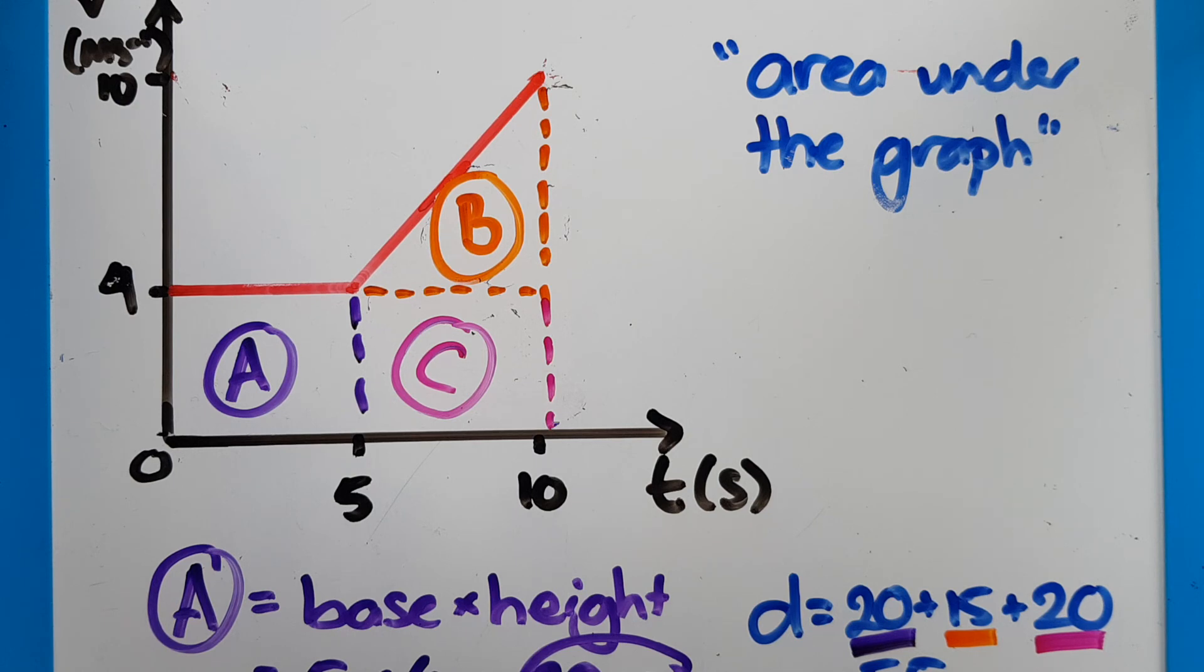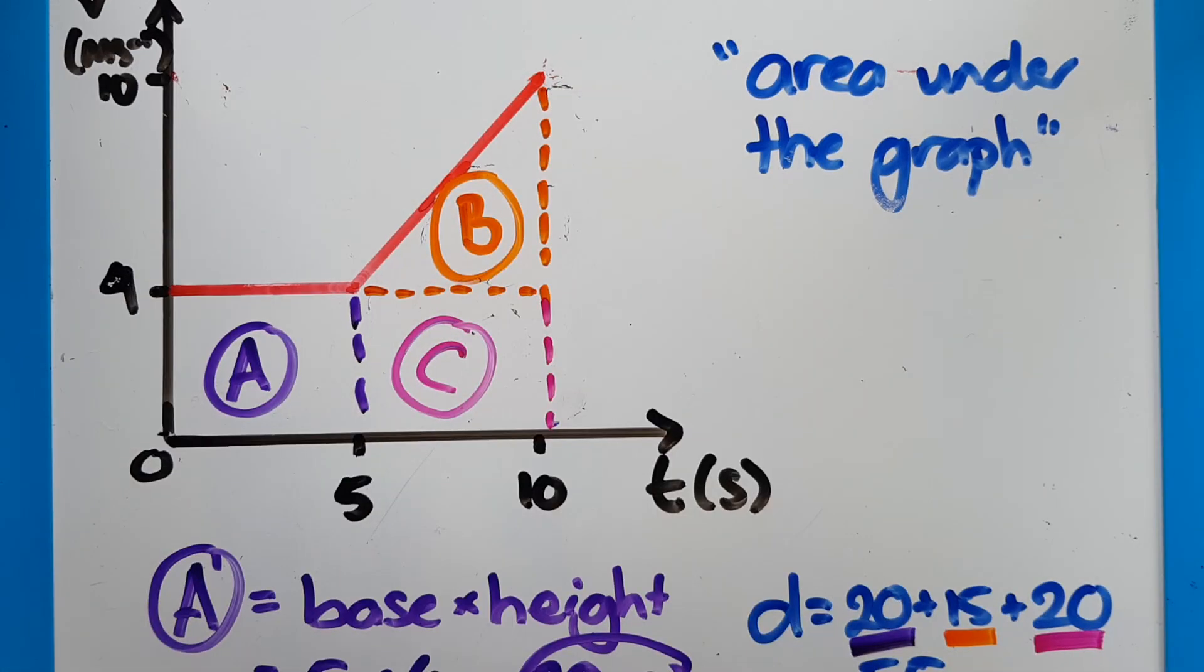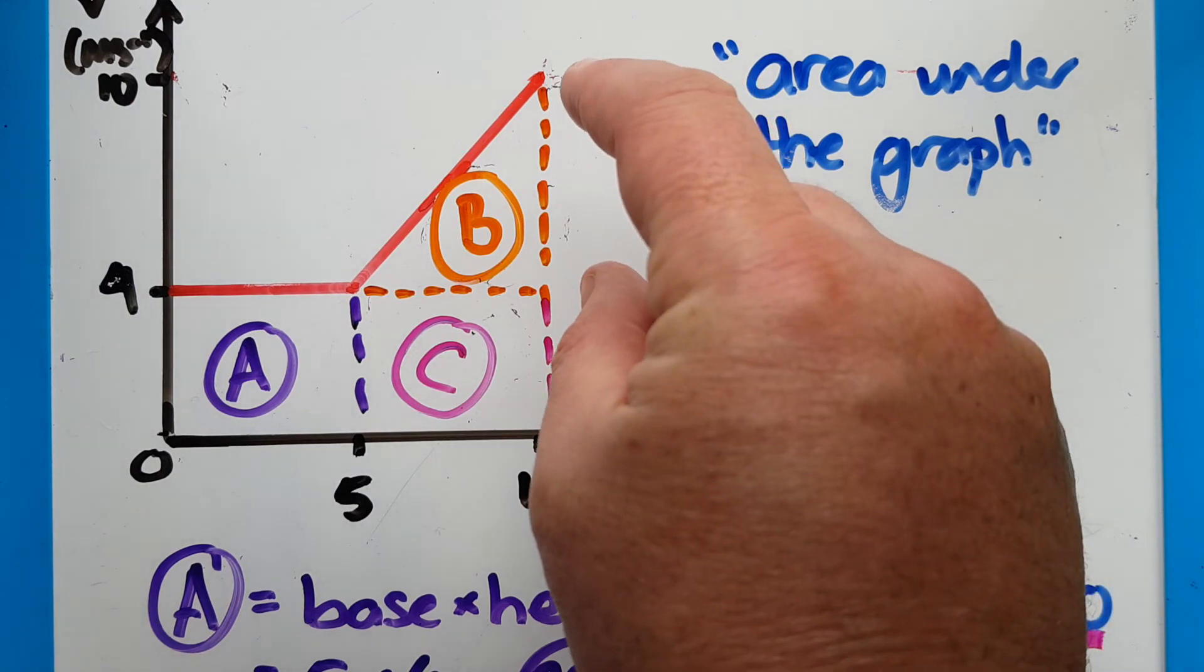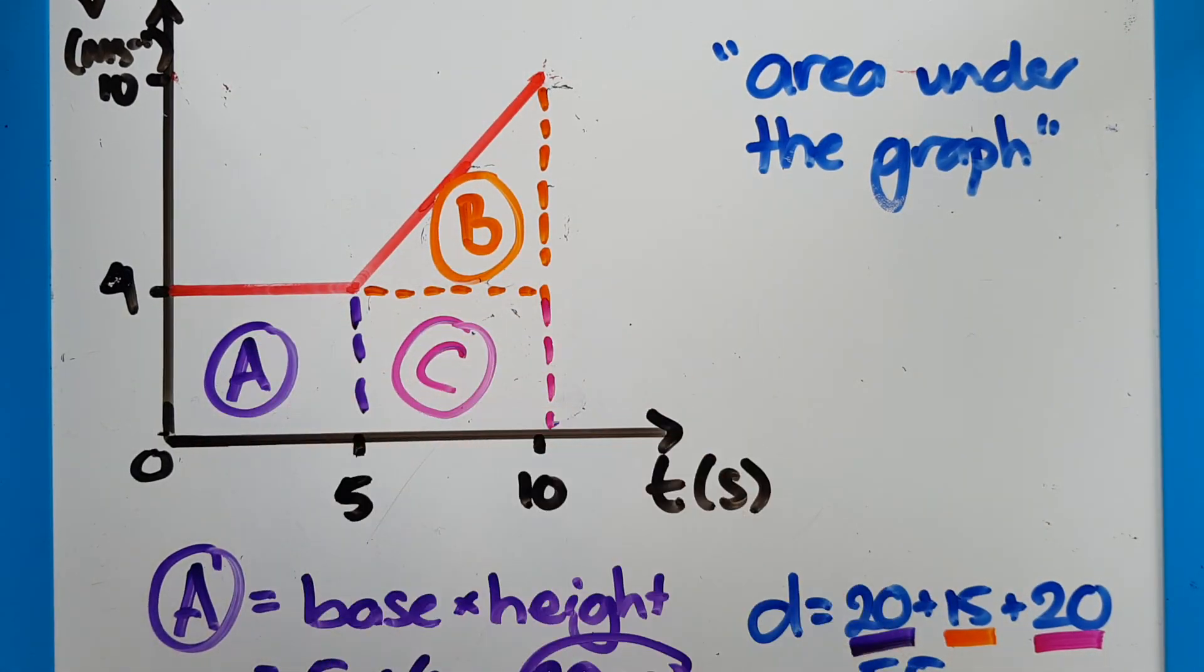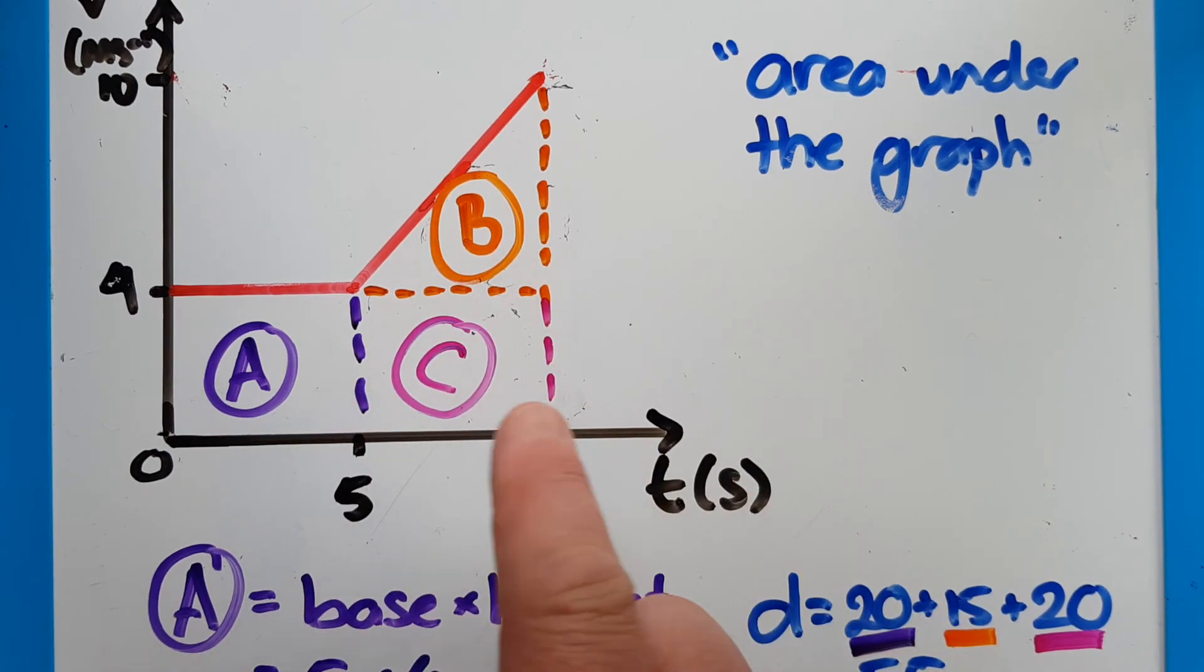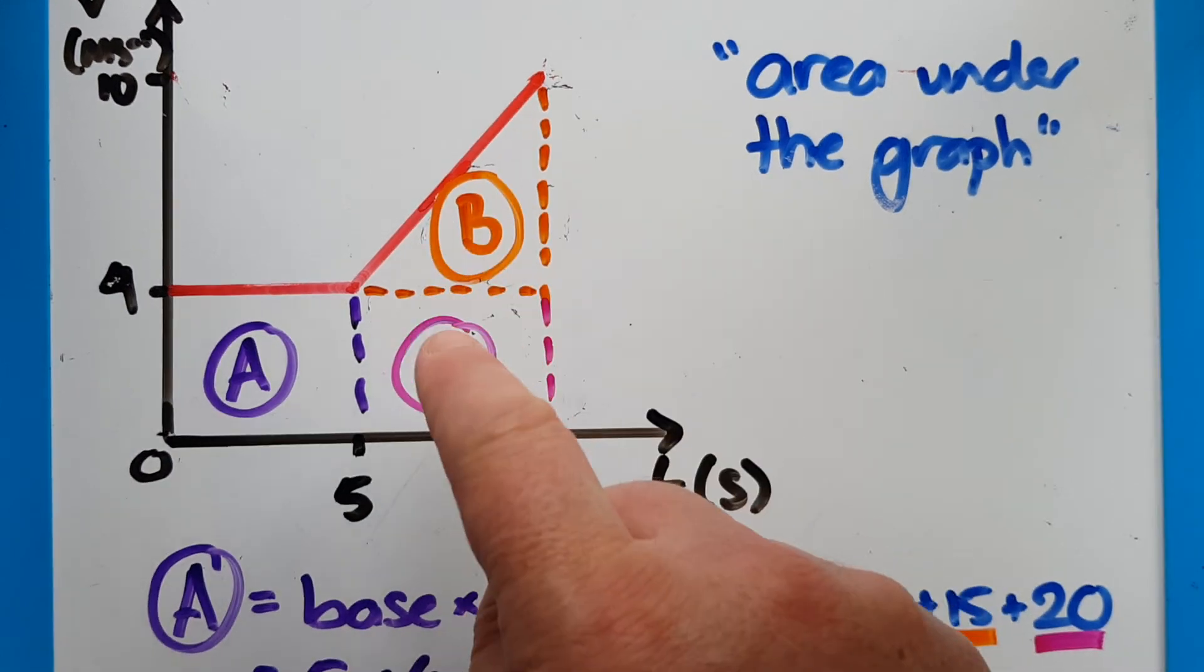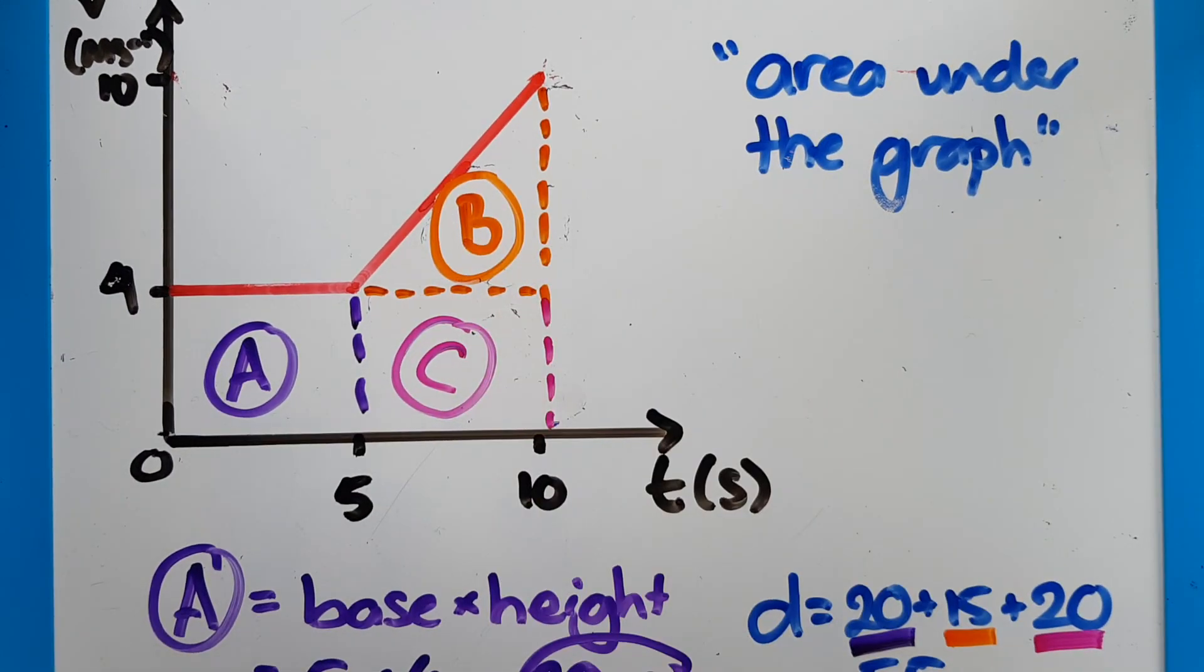So now we have got everything that we can use a speed-time graph for. We can describe its motion, constant speed, accelerating, for example. We can calculate the acceleration. So here its difference is six divided by five is 1.2 meters per second per second. And we can also find out until the 10 second point how far it traveled by looking at the area of each simple polygon under the line.